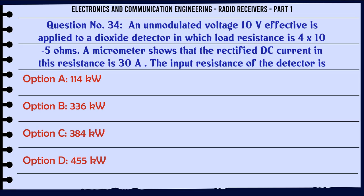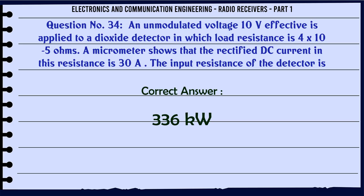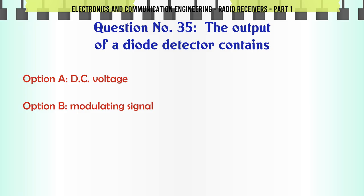An unmodulated voltage of 10V effective is applied to a diode detector in which load resistance is 4×10^5 ohms. A micrometer shows that the rectified DC current in this resistance is 30 μA. The input resistance of the detector is: A. 114 kΩ. B. 336 kΩ. C. 384 kΩ. D. 455 kΩ.